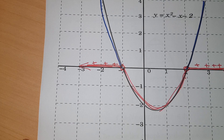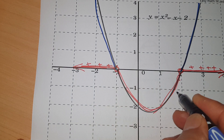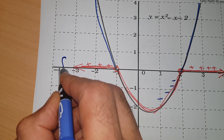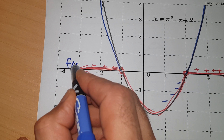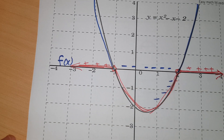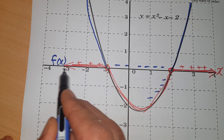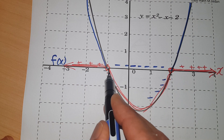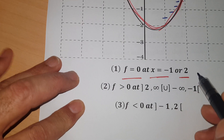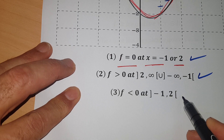The part of the curve that lies below the x-axis gives a negative value. So the sign of f is: positive here, negative here. The function is positive on the interval (-∞, -1) union (2, ∞), and negative on the interval (-1, 2). The function now has three signs: zero, positive, and negative.